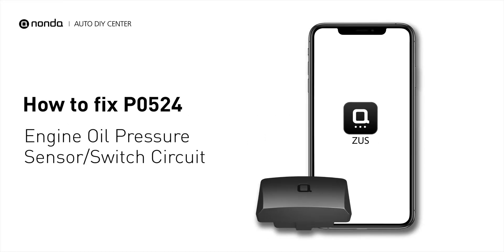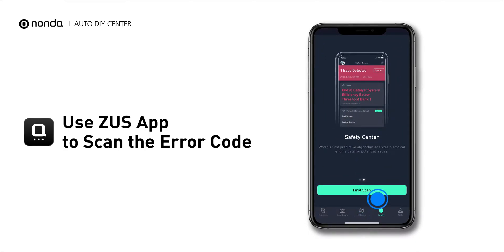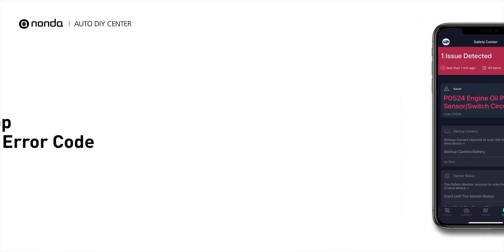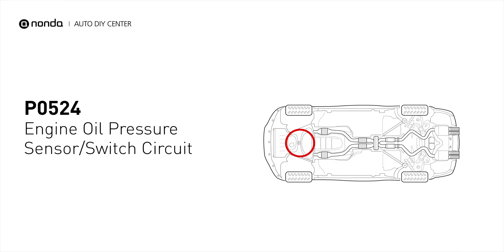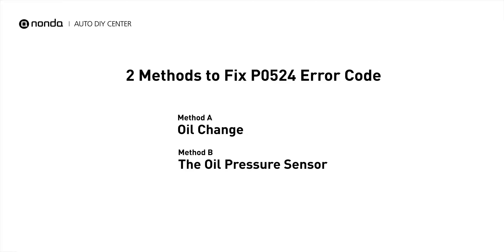If you are getting a P0524 error code, this video is going to show you two practical solutions to fix the error code at home. Use the Zeus app to scan your vehicle and see the error code P0524. This means an abnormally low oil pressure reading has been determined, a problem which could be caused by defective engine components or wrong oil viscosity. Here are two simple DIY methods you can try to solve this problem.